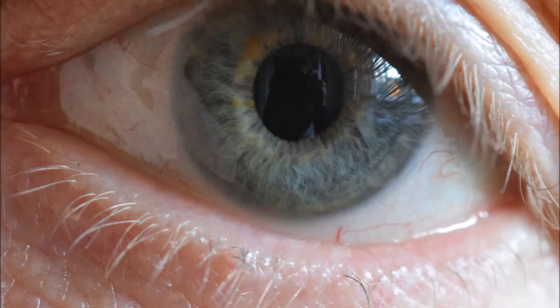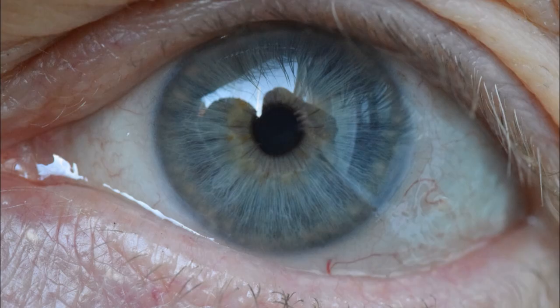So this is a picture of my eye indoors with the pupil somewhat dilated and here's my eye outdoors with the pupil somewhat constricted. So what's going on here? What's the physiology?